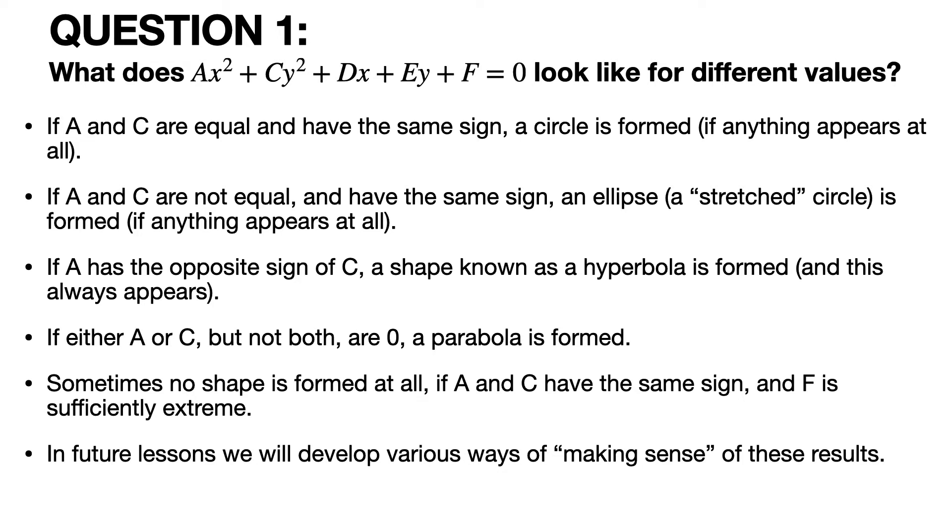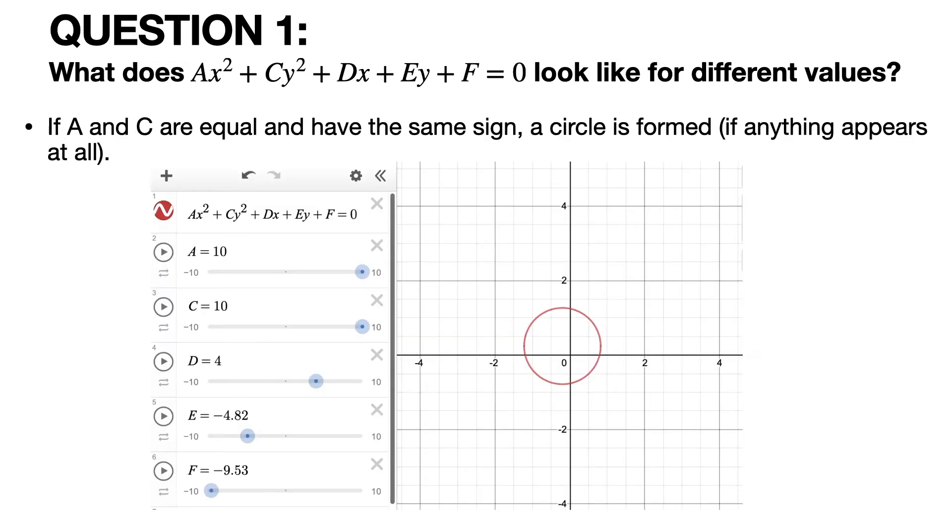This page is here so that you see all of them at the same time. If A and C are equal and have the same sign, a circle is formed, if anything appears at all. And for certain values, nothing will appear at all. We'll discuss that a little bit more in a second.